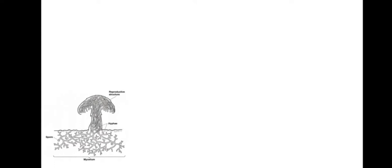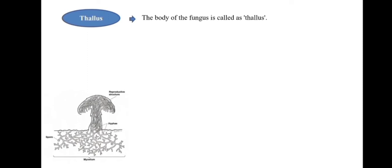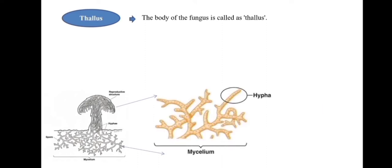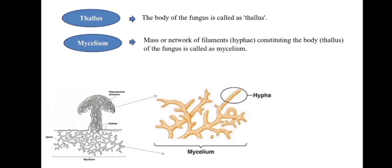In this slide, we will discuss about the somatic structure of fungus. In this photo, you can see a mushroom, which is also an example of fungus. The whole structure is called the thallus — the body of the fungus is called thallus. If you zoom out this thallus, you will get thin filaments in mass. This network or mass of filaments is called mycelium. The mass or network of filaments constituting the body or thallus of a fungus is called mycelium.